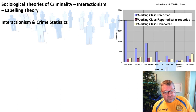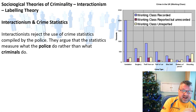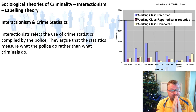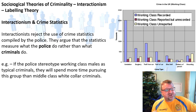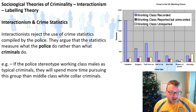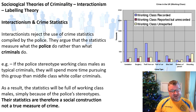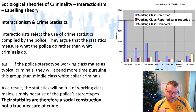Interactionists reject the use of crime statistics compiled by the police, arguing that the statistics measure what the police do rather than what criminals do. If police stereotype working-class males as typical criminals, they'll spend more time pursuing this group than middle-class white-collar criminals. As a result, the statistics will be full of working-class males purely because of police stereotypes. Therefore, crime statistics are a social construction and not a true measure of crime.